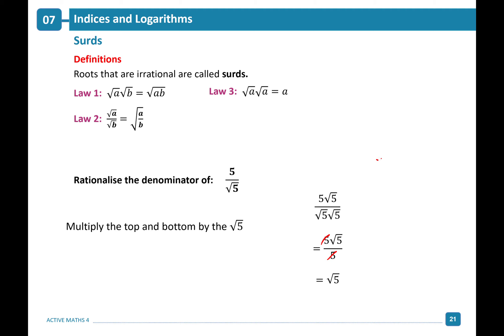Let's look at another example: rationalize 3 over root 7. To rationalize this denominator, we multiply the top and bottom by the surd on the bottom, so we're multiplying top and bottom by root 7. This leaves us with 3 root 7 over 7, since root 7 times root 7 gives us 7. Our surd is written on the numerator and we have rationalized our fraction.